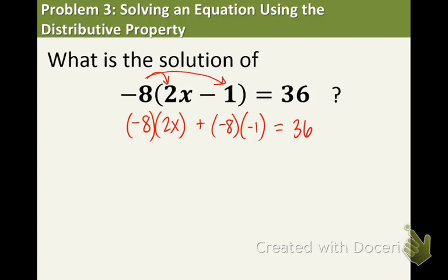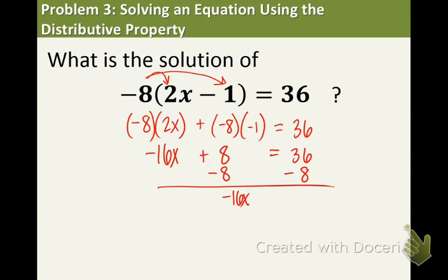Now we need to multiply. Negative 8 times 2x is negative 16x. Negative 1 and negative 8, when you multiply, you get a positive 8. Double negative means you're getting a positive number, and equal to 36. Two-step equation again. Let's get rid of that positive 8 by subtracting 8. Negative 16x comes down. We have 28 on the right side.